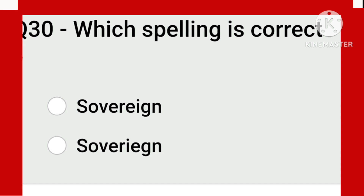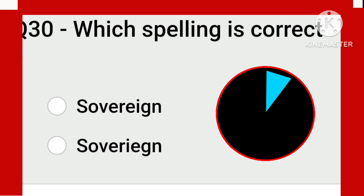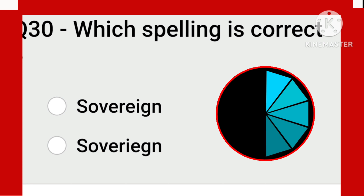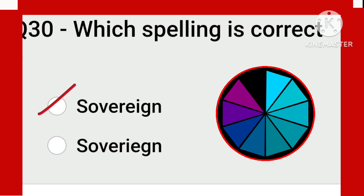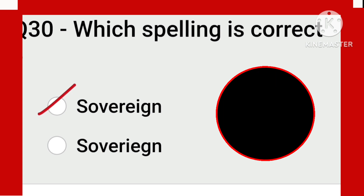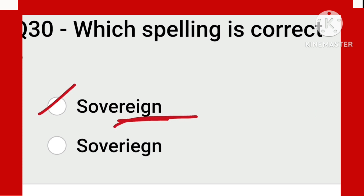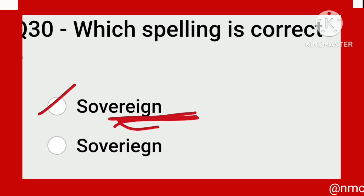Sovereign — meaning supreme authority, one who has full rights, like India as a sovereign country. The correct spelling is the first one. Remember the word 'reign' — R-E-I-G-N is within 'sovereign.' If you remember this root, you will never make a spelling mistake.